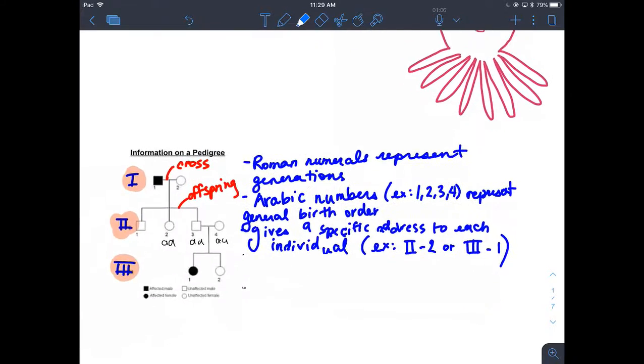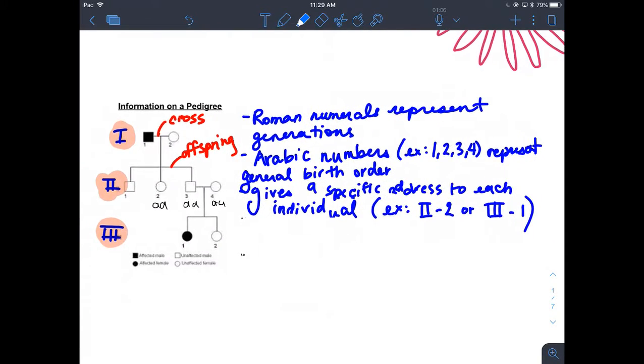The first thing I wanted to talk about with regards to lesson 7 is just pedigrees and how to read them and the information that we get. The Roman numerals on the side that are highlighted in orange help us determine the generation. One being the oldest generation, three being the youngest generation, and they can go anywhere from one Roman numeral all the way up to as many generations that we have. In this class, we're probably not going to have more than three, four, maybe even five though.